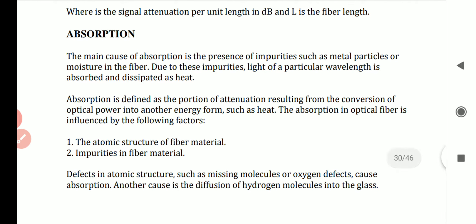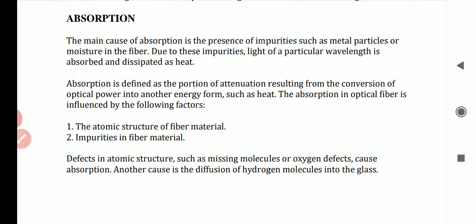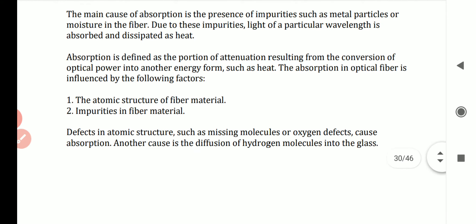The main cause of absorption is the presence of impurities such as metal particles or moisture in the fiber. During fabrication, metal particles may be introduced, or due to temperature, moisture content can be present. Due to these impurities, light of a particular wavelength is absorbed and dissipated as heat.